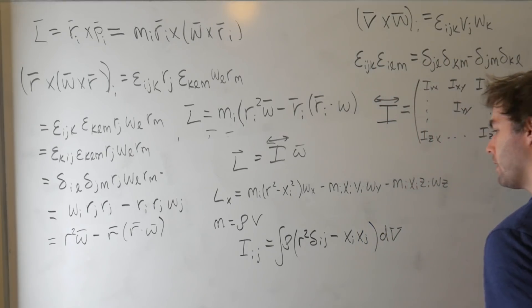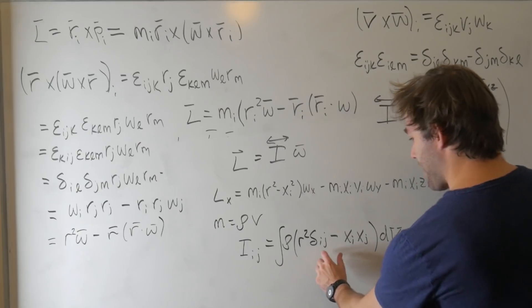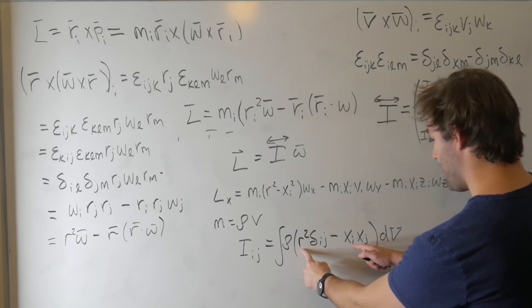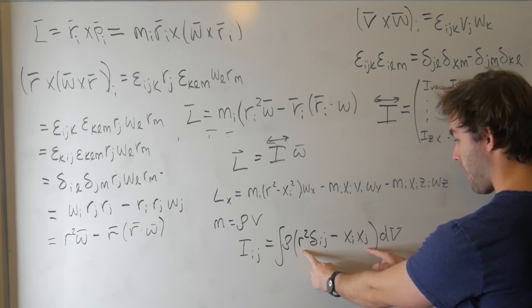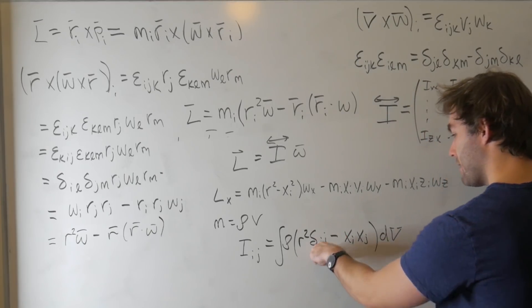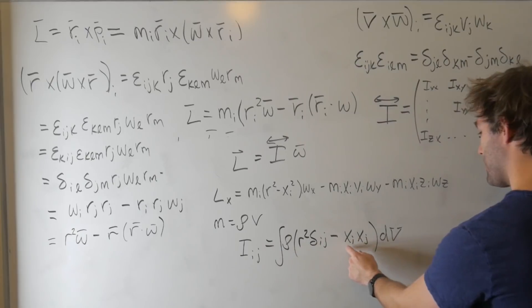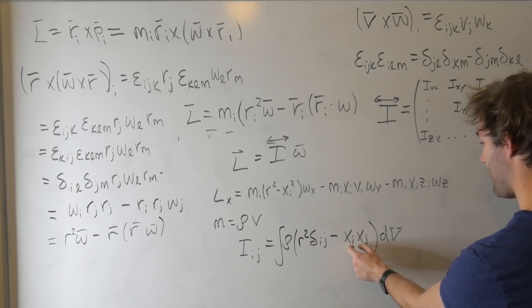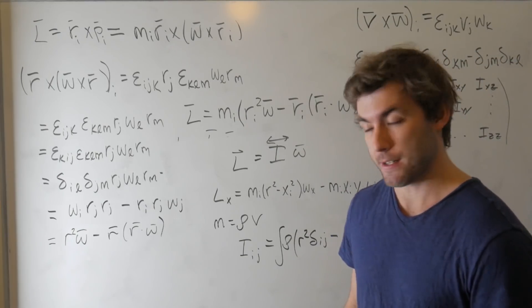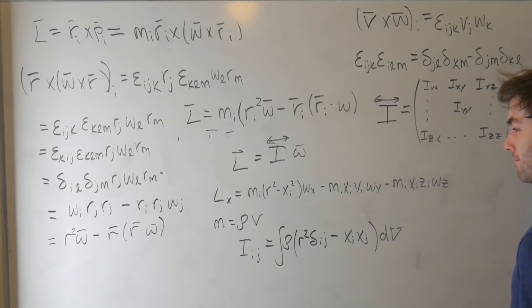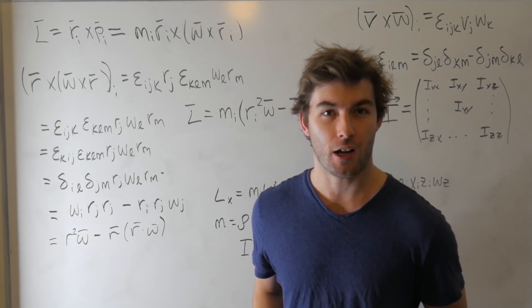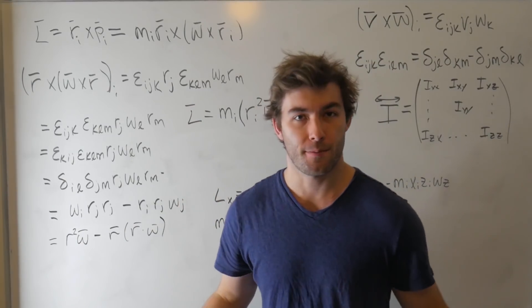So we're summing over this density. And now we need to be able to turn on and off these different components. And the best way to do that is by introducing the Kronecker delta. So we can describe this as r squared delta_ij minus x_i x_j. And then we're integrating over this volume. Well, let's take a look at this for a second. If i equals j, then this Kronecker delta is just one, and we get r squared x_i x_i, or x_i squared, which is this term. If i does not equal j, then this term goes to zero, and we get the mass times minus this x_i x_j, which is exactly what these terms are.